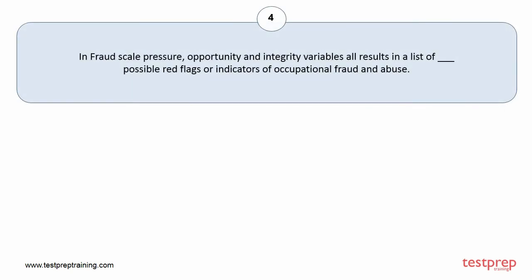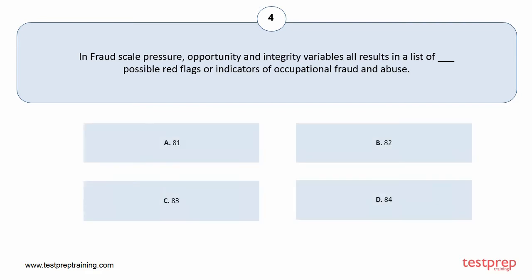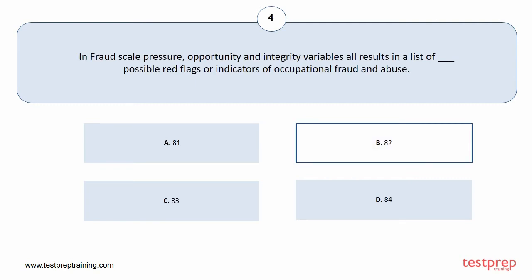Question number 4. In the Fraud Scale, Pressure, Opportunity and Integrity variables all result in a list of how many possible red flags or indicators of occupational fraud and abuse? Your options are A. 81, B. 82, C. 83, D. 84. The correct answer is option B.